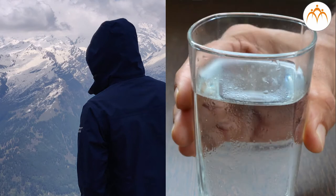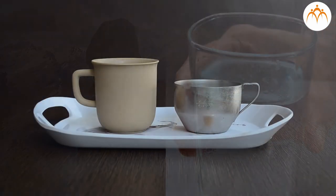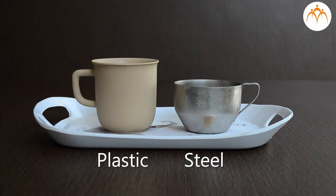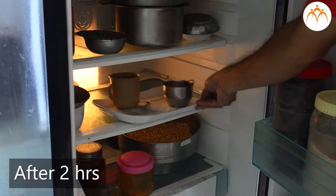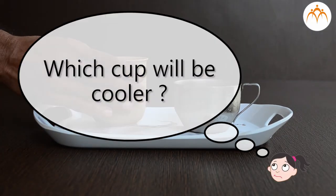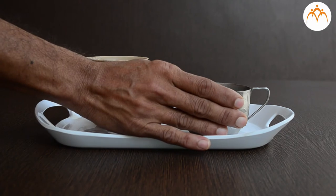Our senses often mislead us. Take these two cups. One is made up of steel while the other one is made up of plastic. Let me keep these in the refrigerator. After two hours, I will take these cups out. If I touch these cups, which one will be cooler? Yes, the steel one.